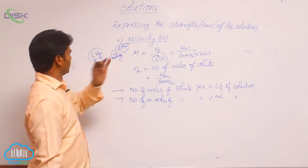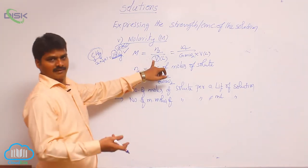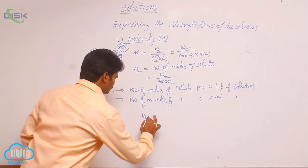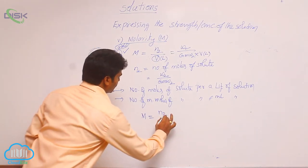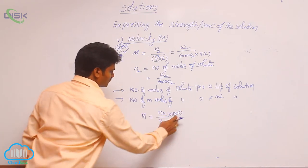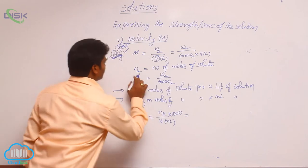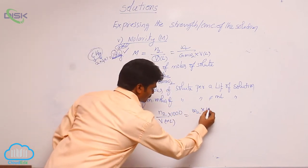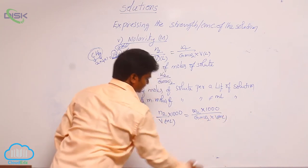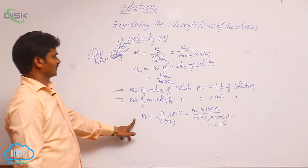If sometimes volume is given in mL, then which formula do we use? If volume is given in mL, then use this formula: M is equal to n2 by volume into 1000, that is n2 into 1000 by V, where volume must be in milliliters. Similarly, expanding n2, that means W2 into 1000 by gram molecular weight 2 into volume in milliliters.